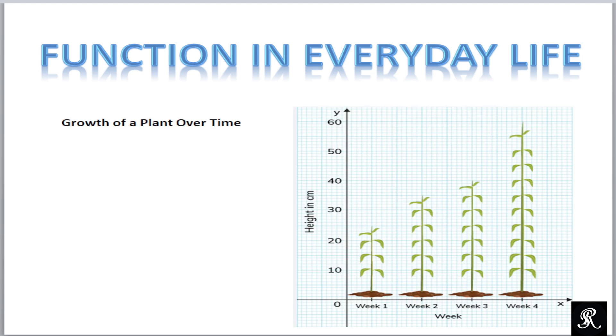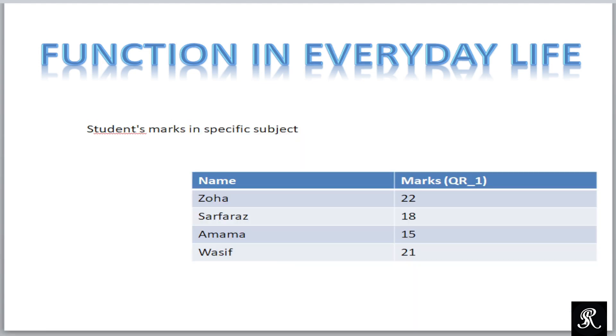Now here we have another example. The growth of the plant is a function of time. In this graph you will see that first week the growth of the plant or the height is 25 centimeter, the next week 35, and third week its height is 40, and the fourth week height is 60 centimeter. What does this mean? As the time passes, the height or the growth of the plant increases, so it depends on the time.